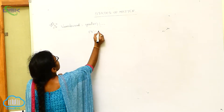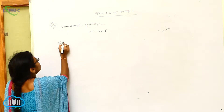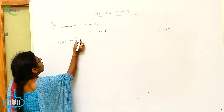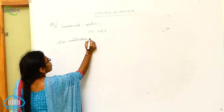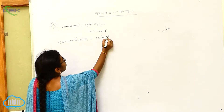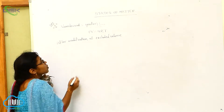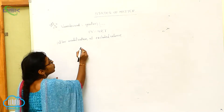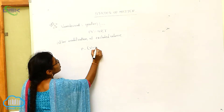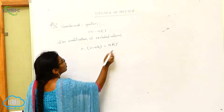Our PV is equal to NRT after modification of the excluded volume. Converting the equation, in place of V we can write here V minus NB is equal to NRT.